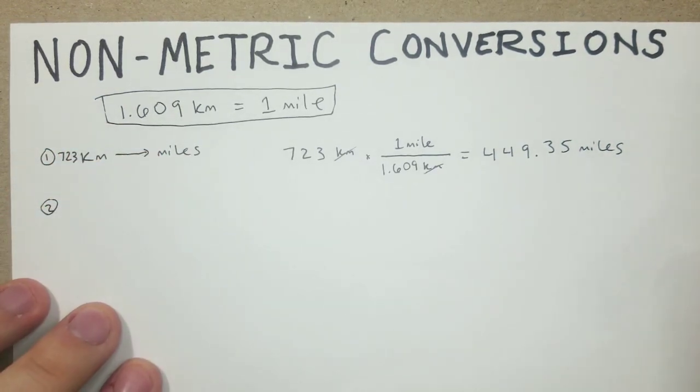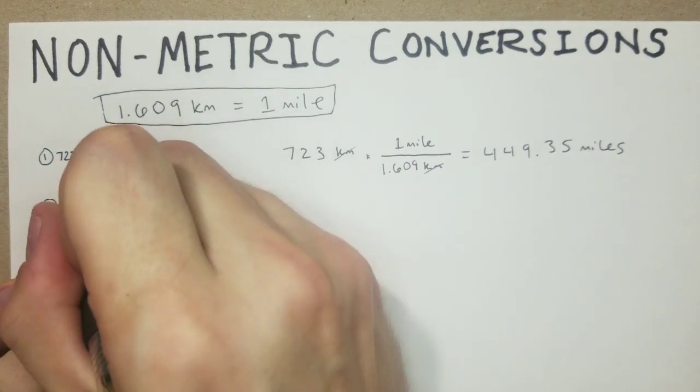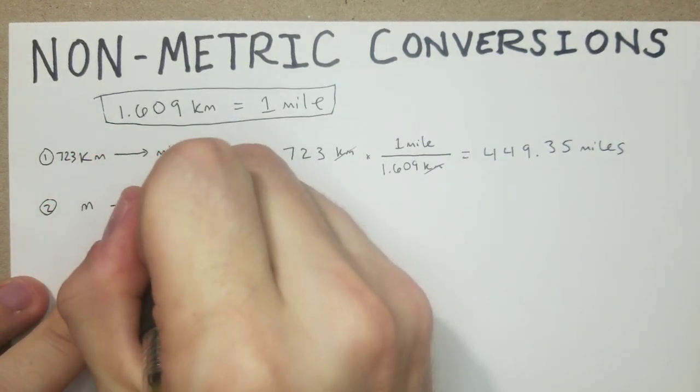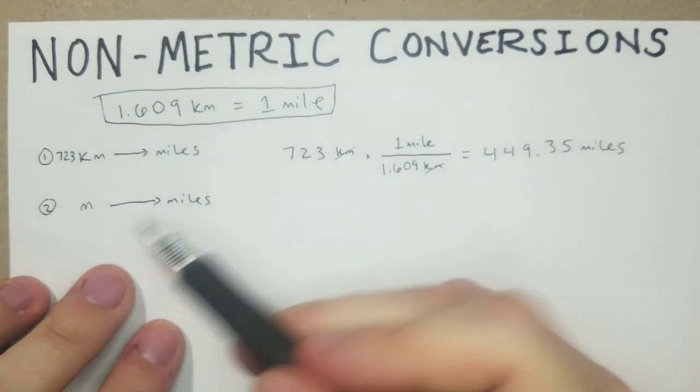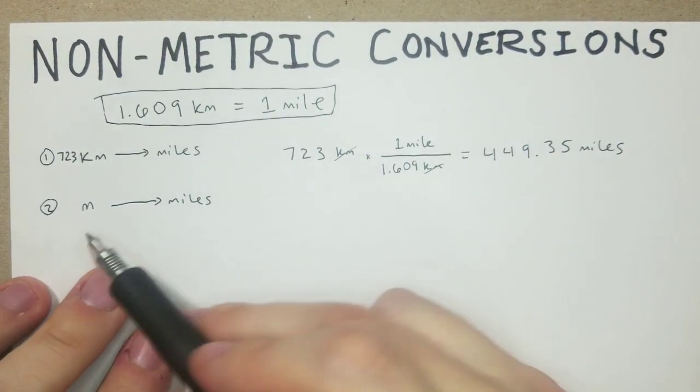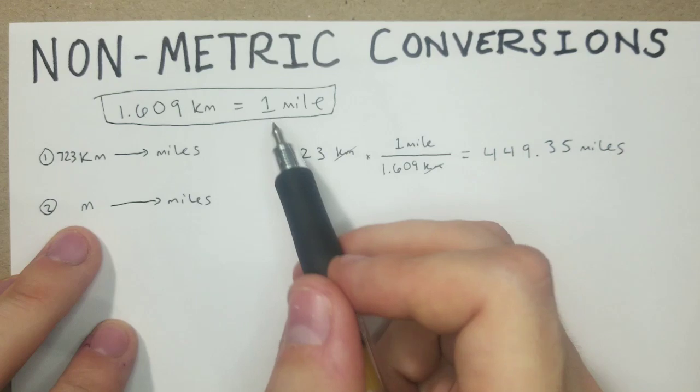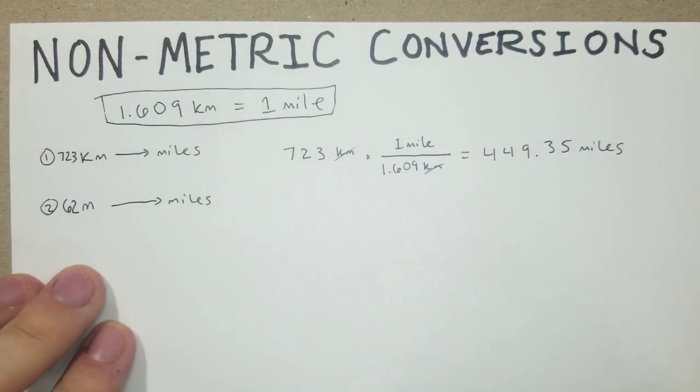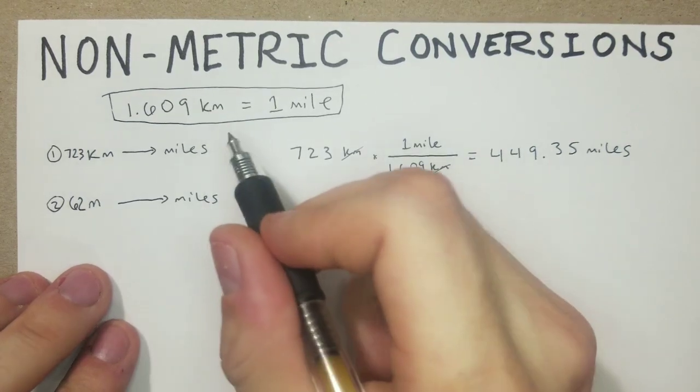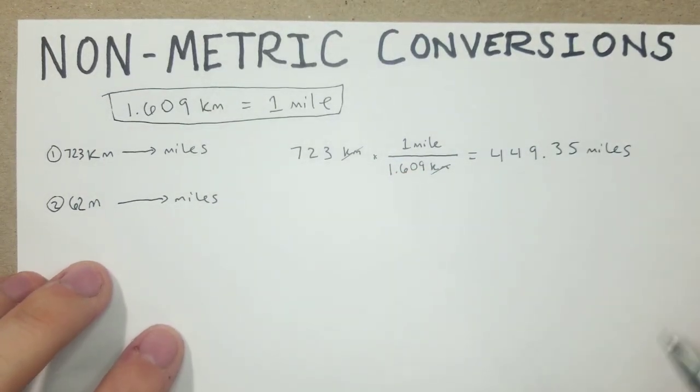Next, we can move on to a type of problem where we're going to go from meters to miles using this. Obviously there is a certain number of meters in a mile, but if we're given kilometers and we have to use this, say we have 62 meters and we're trying to figure out how many miles, we can go back to our metric conversions here.